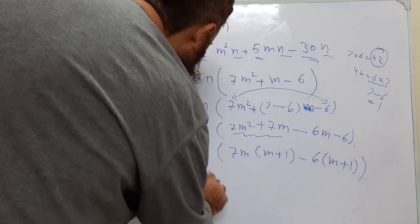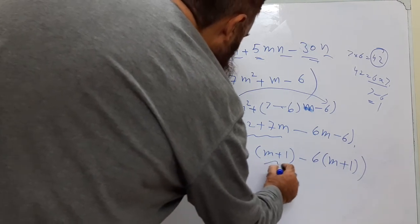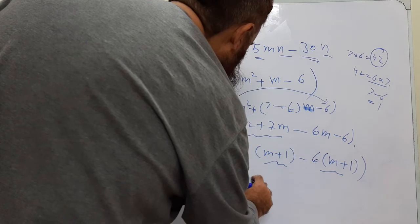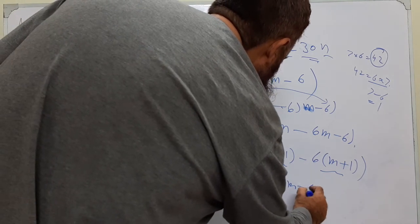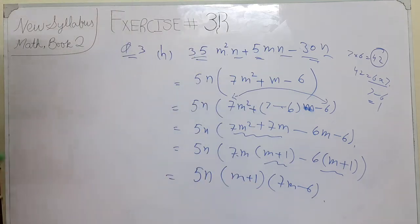Now it remains like this. 5N. These are same. They come one time. Then put a bracket. 7M minus 6. This is the answer, this is the solution.